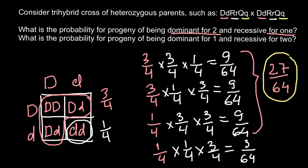There are three different combinations: the second trait dominant and the other two recessive gives 3/64; the first trait dominant and the other two recessive also gives 3/64. So we have three possible combinations, and we multiply 3 over 64 by three, giving us 9 over 64. This is our answer for question two — the probability that two traits would be recessive and one would be dominant.